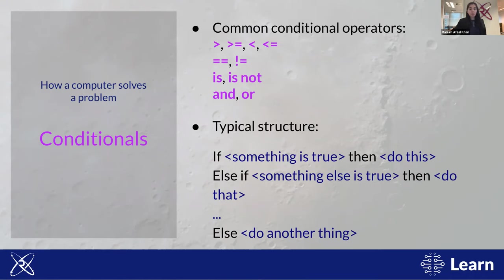In our 'finding largest number' example, we effectively had two branches: if the number is larger, store it; else, discard it. But you can have as many branches as you need. The important thing to remember is that no matter how many branches you have, only one branch will be executed for each conditional block every time the program runs.